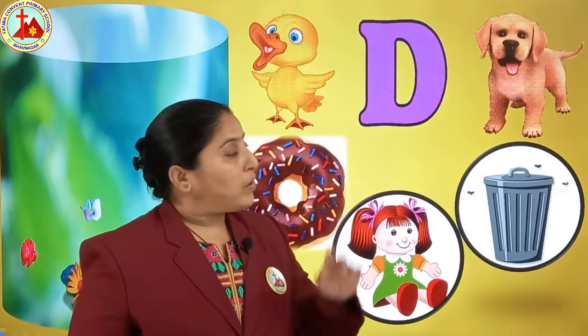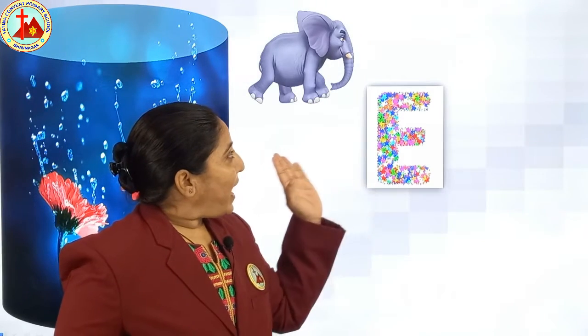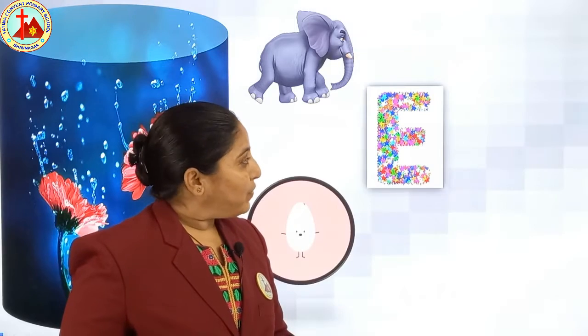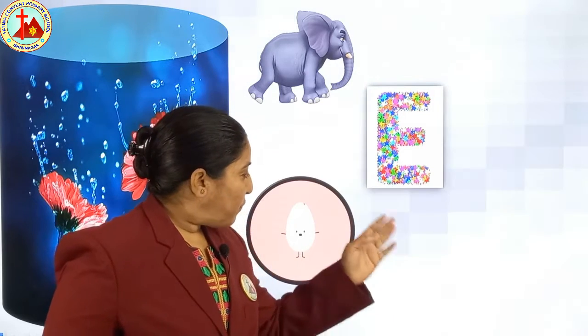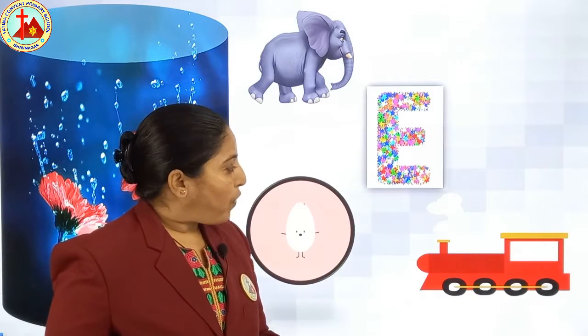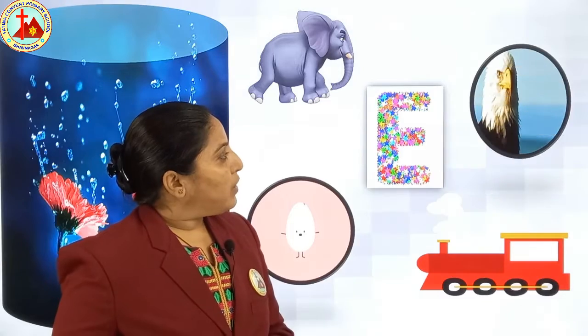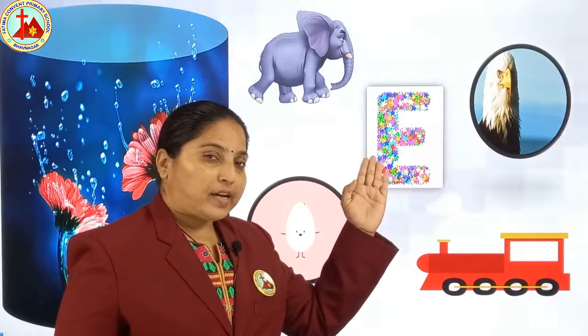So remember all the pictures. Now letter E: E for elephant, E for egg, E for engine, E for eagle.